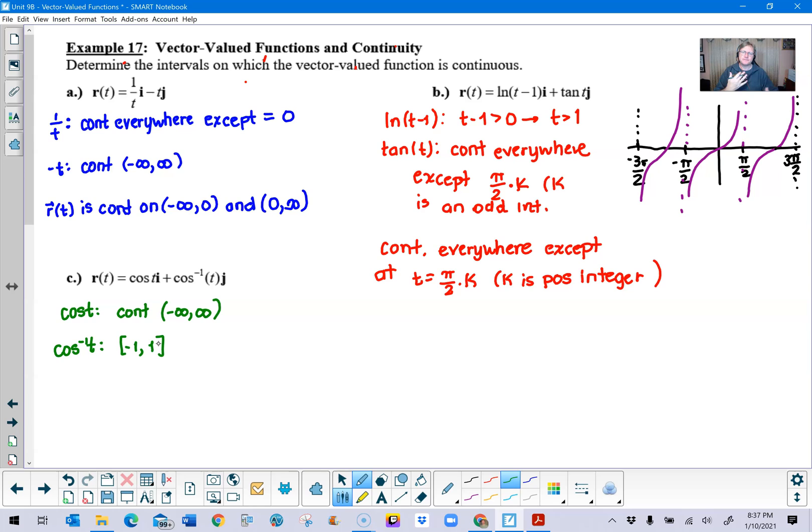And so once the graph gets reflected around the line y equals x, the domain and range values switch.